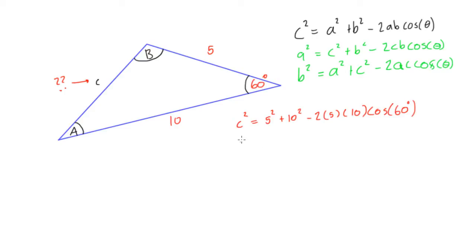Okay, so c squared is equal to 25 plus 100, minus this will be two times five, this is 10 times 10, this is 100, times cosine of 60, which is times 0.5. You just type that in your calculator, cosine 60 is equal to 0.5 if you're in degrees.